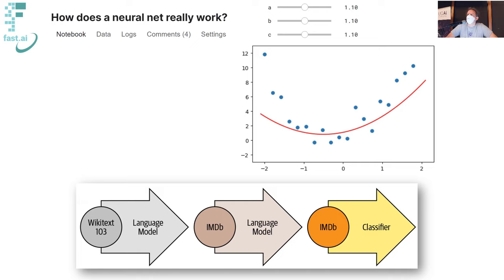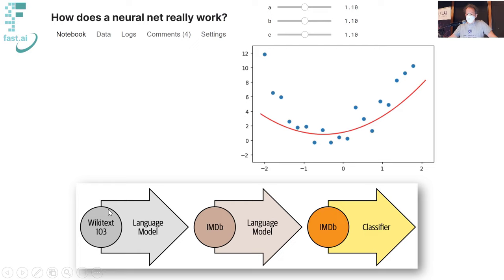To get good at being a language model, a neural network has to get good at a lot of things. It has to understand how language works at a reasonably good level, and it needs to understand what it's actually talking about and what is actually true. This was trained using a very similar approach to what we'll be looking at for fine-tuning, starting with random weights, and at the end there was a model that could correctly predict more than 30% of the time what the next word of a Wikipedia article would be.